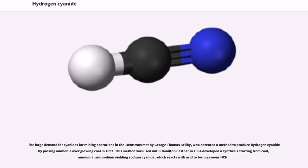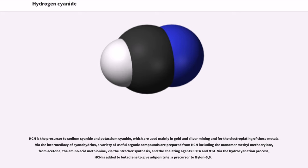HCN is the precursor to sodium cyanide and potassium cyanide, which are used mainly in gold and silver mining and for the electroplating of those metals. Via the intermediacy of cyanohydrins, a variety of useful organic compounds are prepared from HCN, including the monomer methyl methacrylate from acetone, the amino acid methionine via the Strecker synthesis, and the chelating agents EDTA and NTA. Via the hydrocyanation process, HCN is added to butadiene to give adiponitrile, a precursor to nylon 6,6.